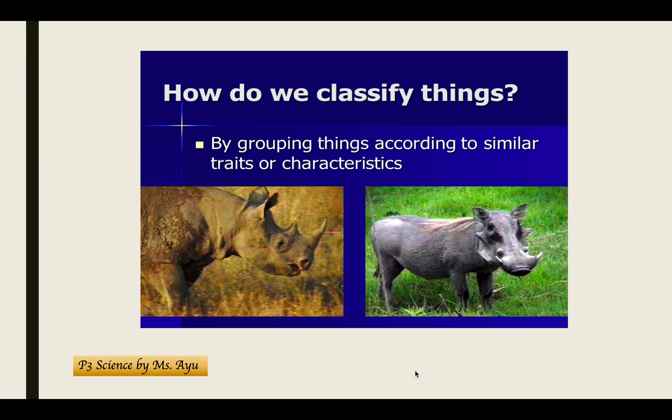Next, how do we classify things? We classify by grouping things according to similar traits or characteristics. Looking at the picture of animals, you can classify things according to their color, as I explained before, or according to their shape, size, uses, or taste.